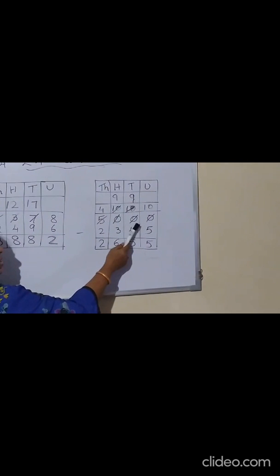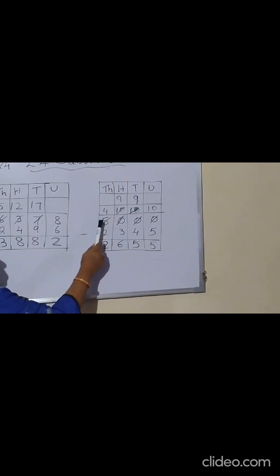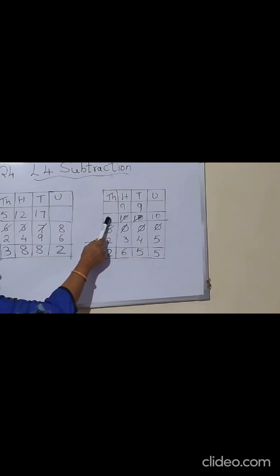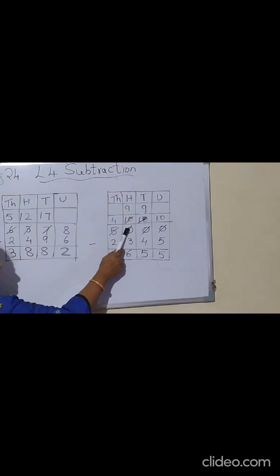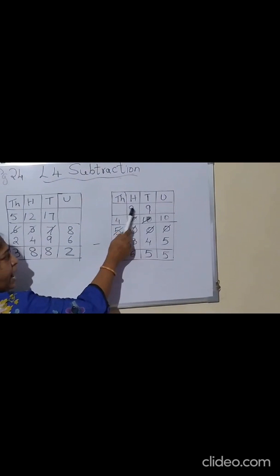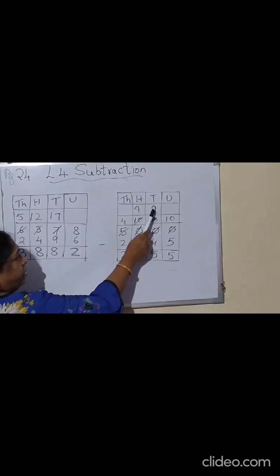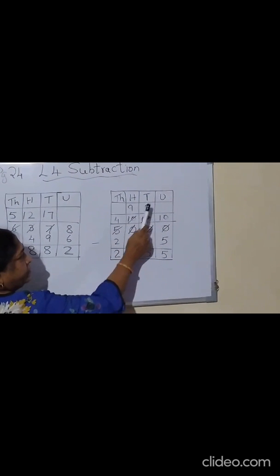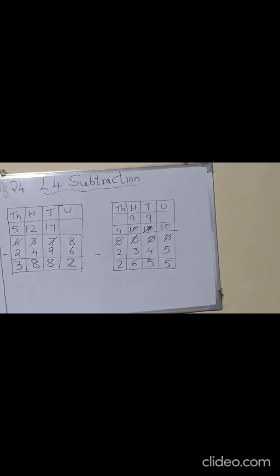Did you understand how to do this sum? I am explaining once again. Here it is 0, so we have to take from here. Here is also 0, so we will take from here. Here is also 0, so we cannot take from there. So we will have to take from this 5 — take 1 from 5, we will get 4 over here. Give it to the hundreds place number — there it will become 10. From that 10 you have to remove 1 — it will become 9 — and give it to the tens place. Again you remove 1 from the tens place — you will get 9 over here — and give that 1 to the units place number. And then you have to do the subtraction.